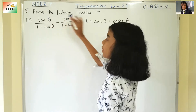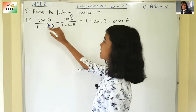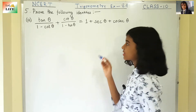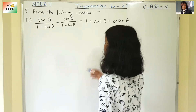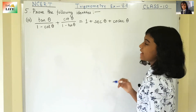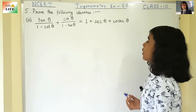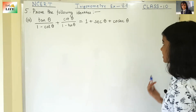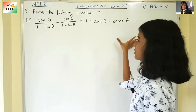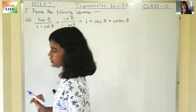Prove the following identities. We have to prove: tan theta by 1 minus cot theta, plus cot theta by 1 minus tan theta, is equal to 1 plus sec theta plus cosec theta. So we have to prove whether this left side is equal to this right side.